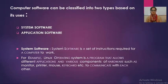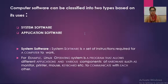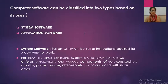Computer softwares can be classified into two main types. These are the two basic types of software that we require when we have to operate any computer. These two categories are system software and application software. So first of all we start with system software.